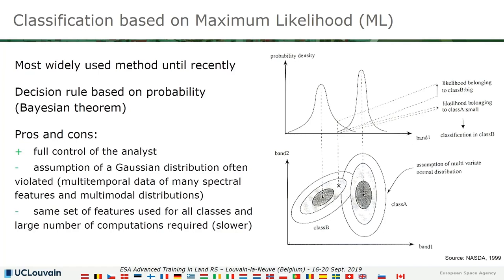The disadvantage is that the assumption that the density function follows a Gaussian distribution is often not true, and when this is not true your result can be questioned. In terms of processing, the same set of features must be used for all the classes, so you can lose efficiency because processing can become quite expensive.